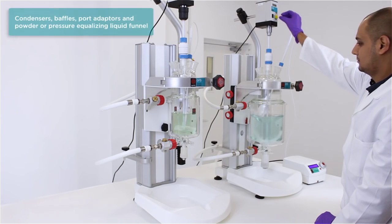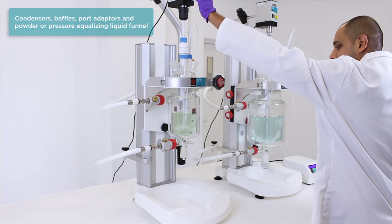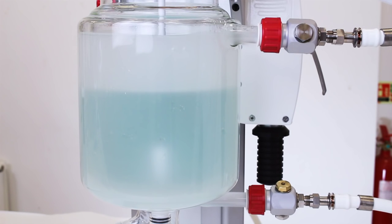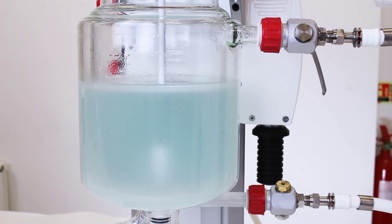Many accessories are available including condensers, baffles, port adapters and a powder or pressure equalising liquid funnel. Optional rapid oil drain allows oil to be safely and cleanly drained from the jacketed reactor back into the circulator.